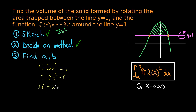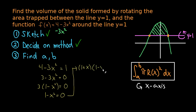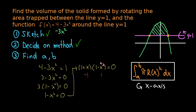Solving this equation: subtract 1 to get 3 minus 3x squared equals 0. Factor out a 3 to get 3 times (1 minus x squared) equals 0. Dividing by 3 gives 1 minus x squared equals 0. Using the difference of squares formula, this factors to (1 plus x)(1 minus x) equals 0. So x equals minus 1 and x equals 1 are our solutions. These are the leftmost and rightmost intersection points, giving us a equals minus 1 and b equals 1 as our bounds of integration.